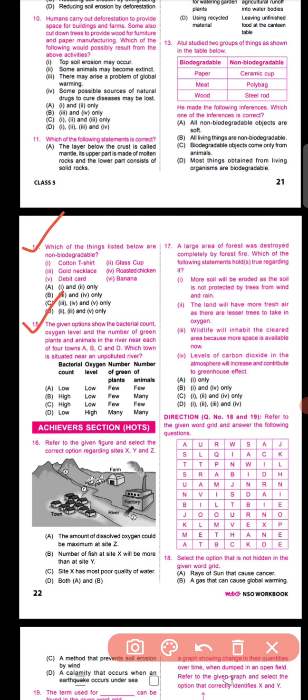Question number sixteen refers to a figure with sites X, Y, and Z on a river. The options discuss dissolved oxygen levels and fish counts. The correct answer is option B: the number of fish at site X will be more than at site Y, because site Y has farms and towns nearby, meaning water quality is poorer and fish numbers are lower than at site X.